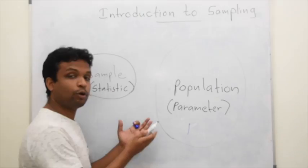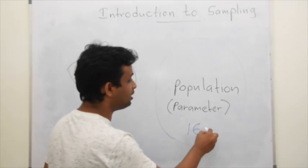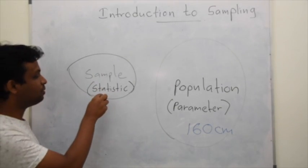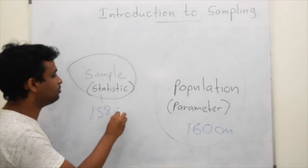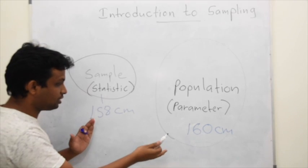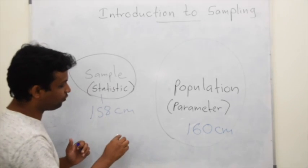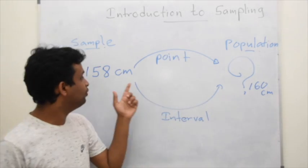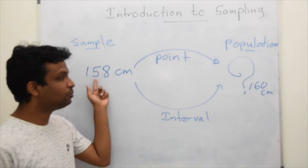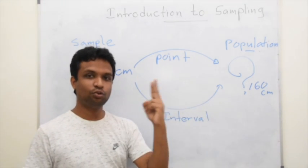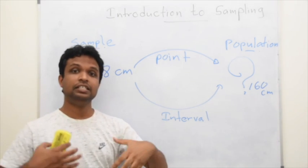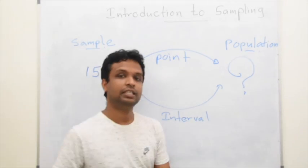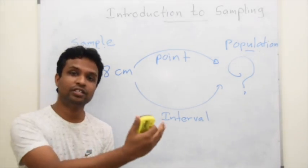Let's take an example. The population mean of height is 160 centimeters. You take a sample and the sample mean may be 158 centimeters. That 2-centimeter difference we call sampling error. But in general, we don't know the population parameter — that's why we take a sample and make inferences to the population.